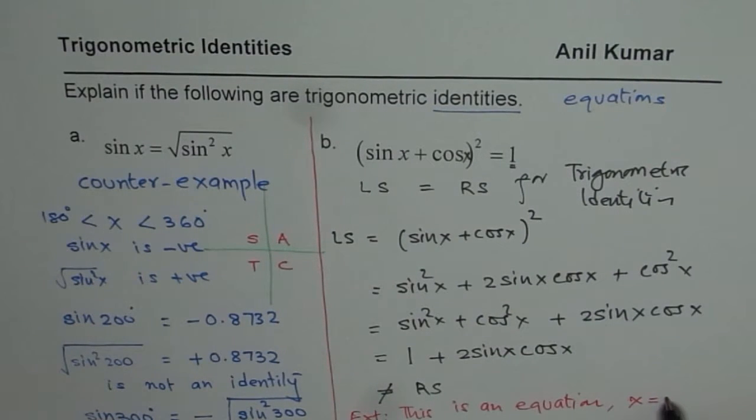Which is n times pi by 2, where n belongs to integers. So it is true for 0, it is true for pi by 2, pi, 3 pi by 2, all those values, but not for all the values.